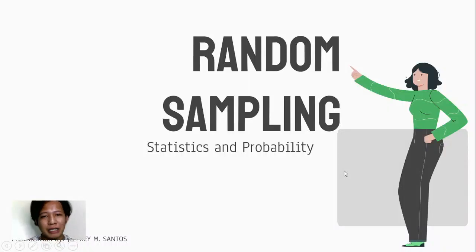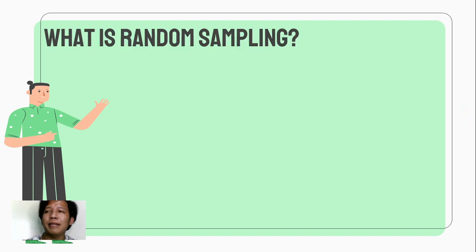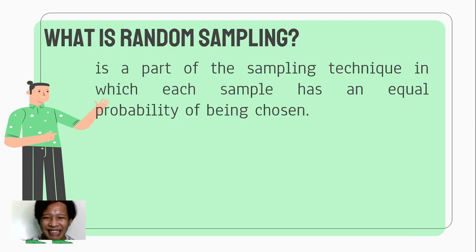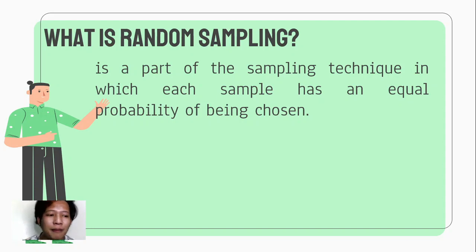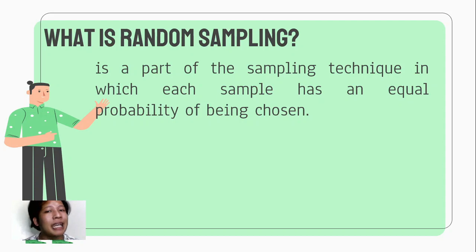Good day everyone. For today's video, we're going to discuss random sampling. What is random sampling? Random sampling is a part of the sampling technique in which each sample has an equal probability of being chosen. Ibig sabihin, from our population or matter of interest, kukuha tayo randomly — hindi natin sila pipiliin para maiwasan natin yung tinatawag na bias. Binibigyan natin ng equal chances ang lahat para mapili.